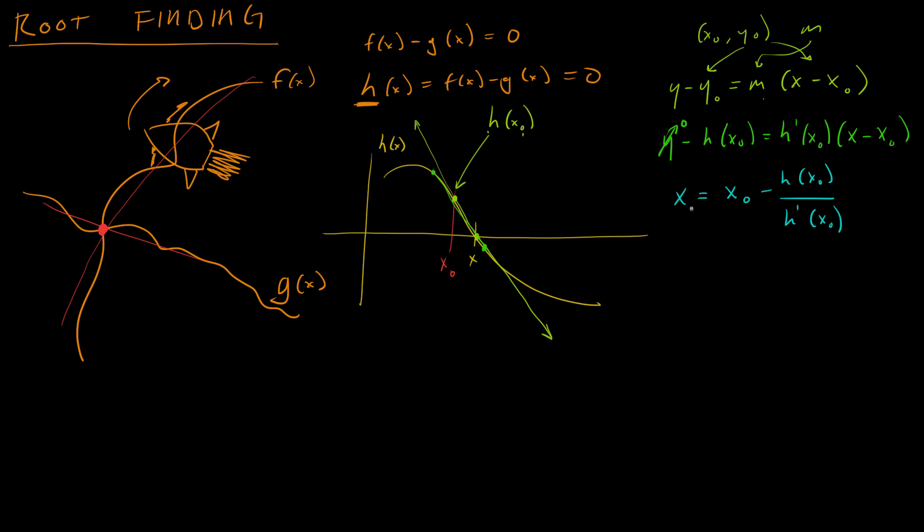Now, that is an approximation of x, not actually x. So I'm going to call it x₁. So this line right here is going to get an intercept with the x axis, pretty close to where x is. And I'm going to call that x₁.